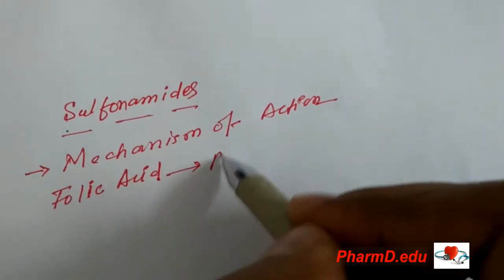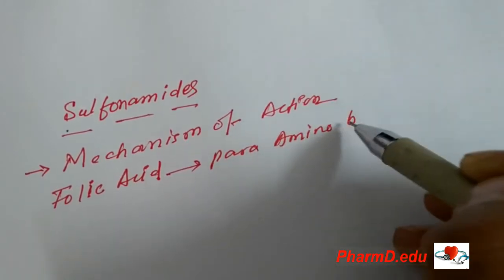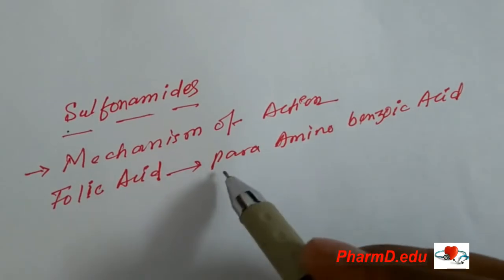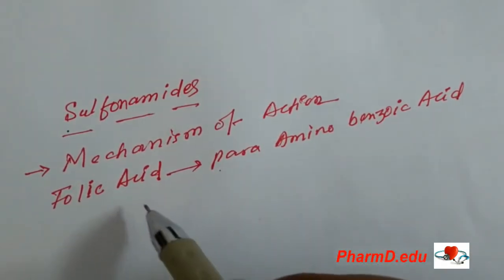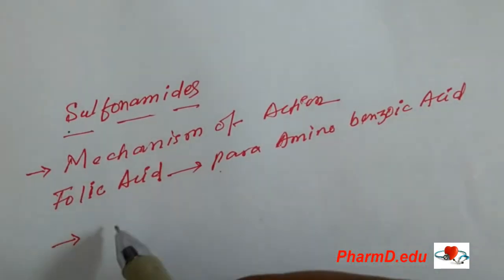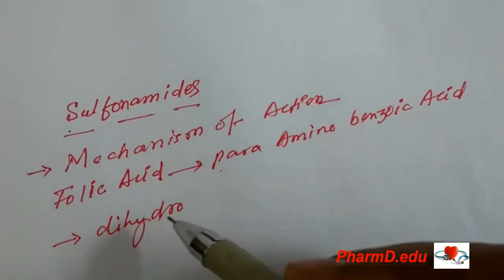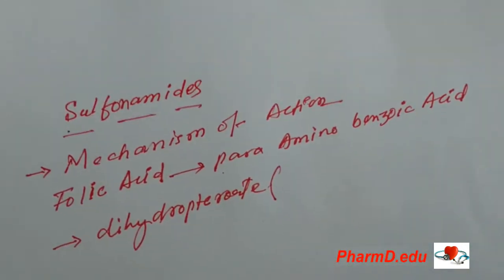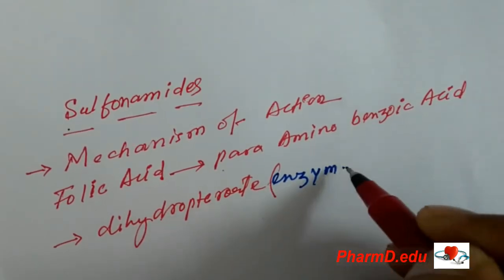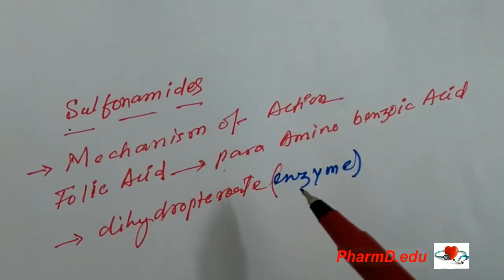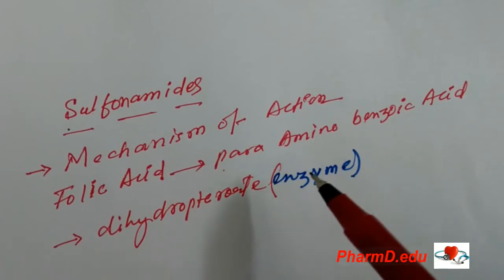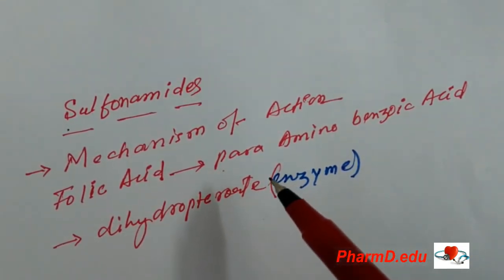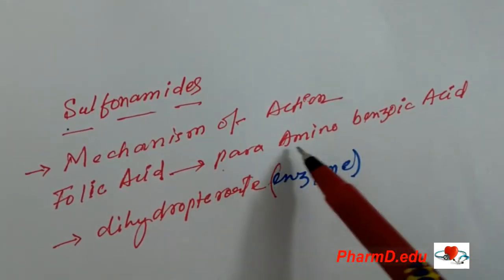How does folic acid synthesis occur? Para-aminobenzoic acid is the precursor of folic acid. There is an enzyme called dihydropteroate synthase. This enzyme attaches to para-aminobenzoic acid and carries out the synthesis of folic acid.